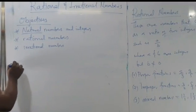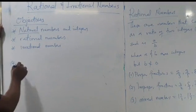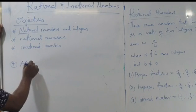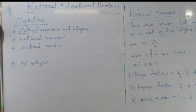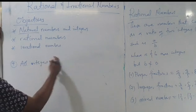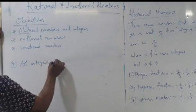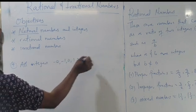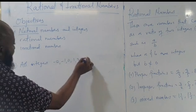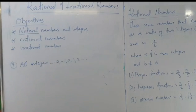Number four: all integers are rational numbers. All integers — that includes minus 2, minus 1, 0, 1, 2, and so on and so forth. All integers are rational numbers.